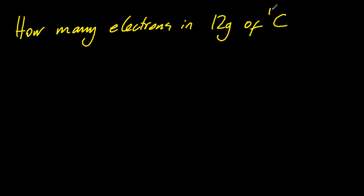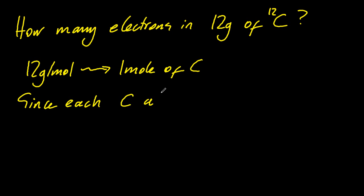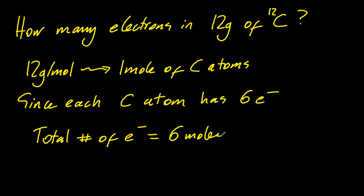Okay, how many electrons in 12 grams of carbon 12? Well, 12 grams per mole. I've got 1 mole of carbon atoms. And every carbon atom has 6 electrons. So that means I must have 6 moles of electrons, which is 3.6 times 10 to the 24 electrons.